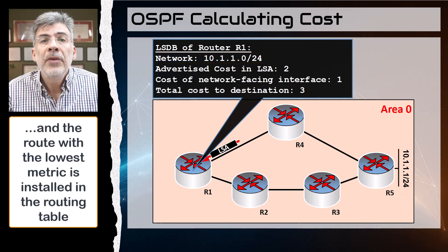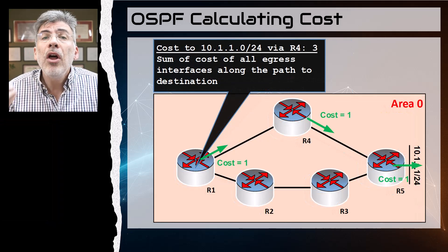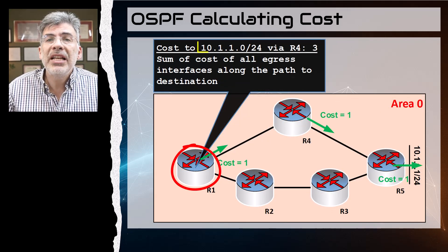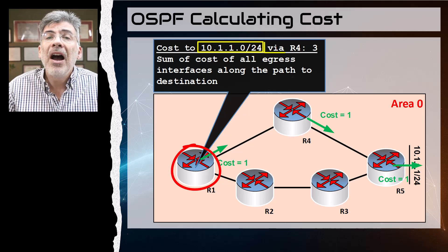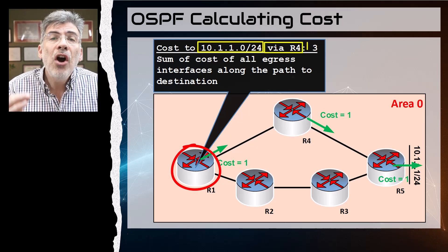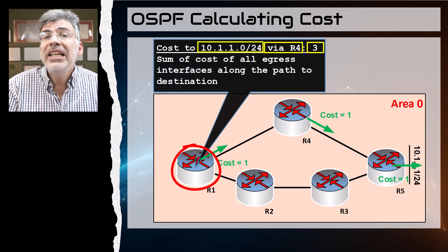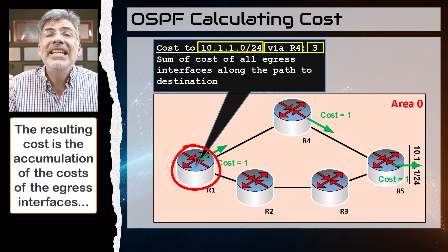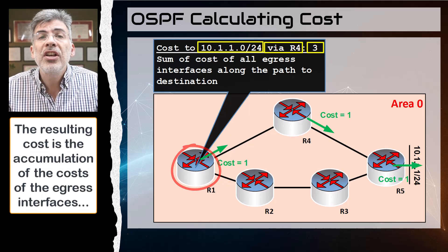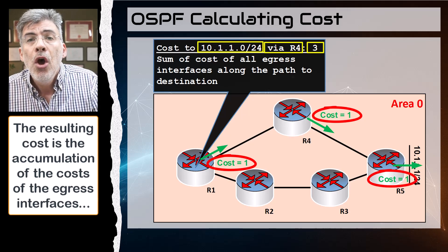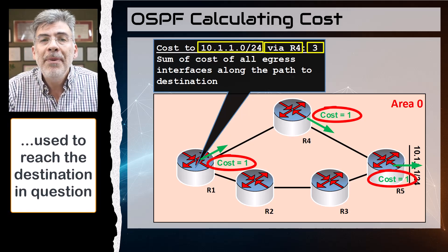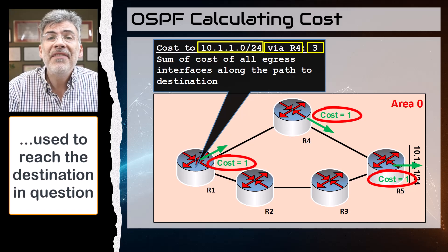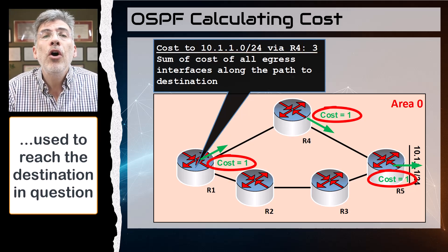So what's the result? Well, R1 learns about the destination network of 10.1.1.0/24 via R4, and the cost to reach it actually comes down to this: it's the accumulation of the costs of the egress interfaces or the destination network-facing interfaces along the path.